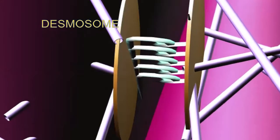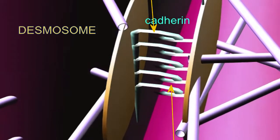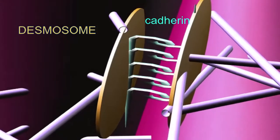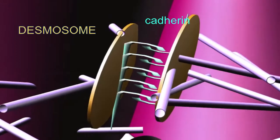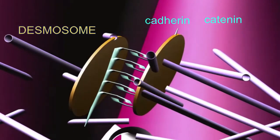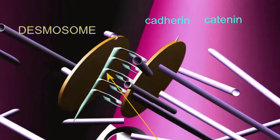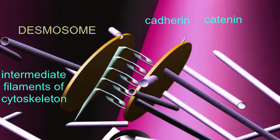At a desmosome, molecules of cadherin from each of the two cardiac muscle cells link, and these molecules of cadherin are then attached to proteins known as catenins in plaques, which then link to the intermediate filaments of the cytoskeleton.